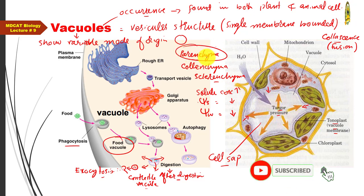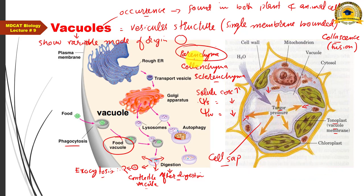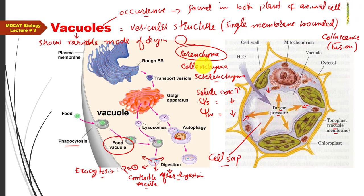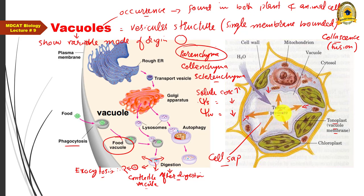The plant cell vacuole is involved in the development of turgor pressure, and this turgor phenomenon is mainly associated with parenchyma cells. Turgor provides support to young plant parts — for example, grass leaves appear erect because their parenchyma cells have this large vacuole-driven turgor, giving them mechanical support.